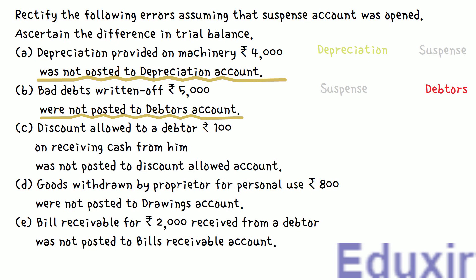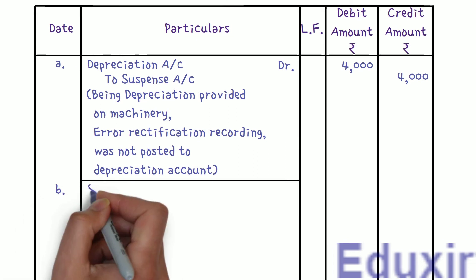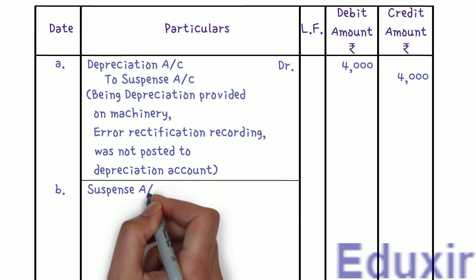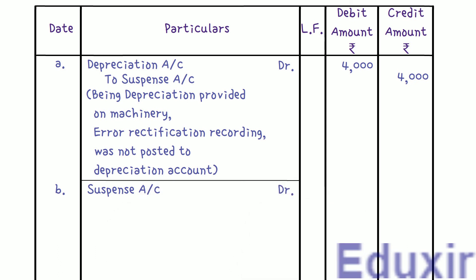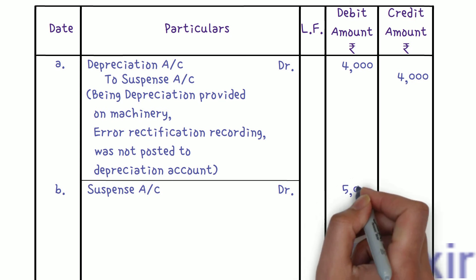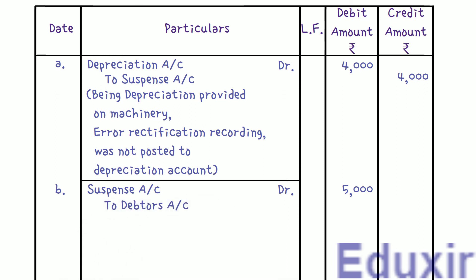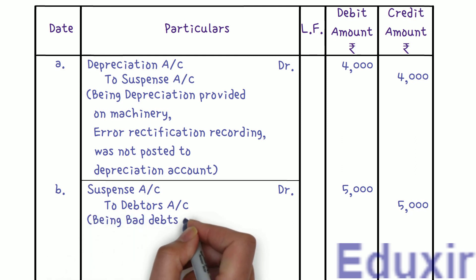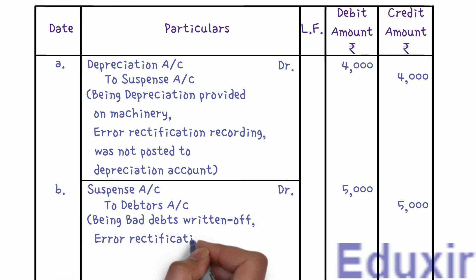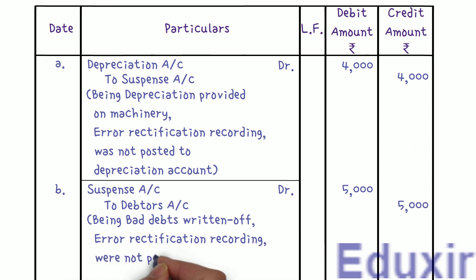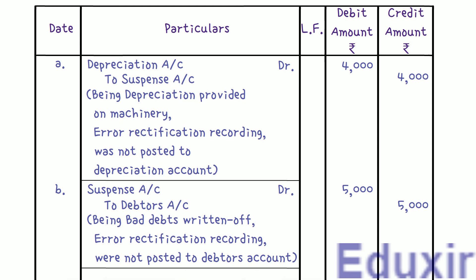Let us now proceed with the journal entry for this error rectification. Suspense Account Dr — 5000 rupees. To Debtors Account — 5000 rupees. Narration: Being bad debts written off; error rectification regarding amount not posted to Debtors Account. That completes the recording of these error rectification entries.